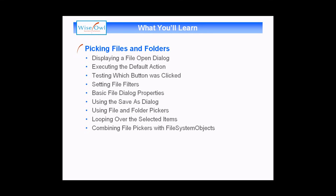We'll mention a few of the basic file dialog properties as well, such as setting the title and setting the initial folder path, before we move on and show you how to use the save as dialog and how similar that is to the file open dialog box. For the second half of the video we'll look at how to use file and folder pickers, which don't have default actions - they just return the path of a file or folder that you select. We'll explain how to loop over the selected items collection and also how you can combine file pickers with file system objects to do much more interesting things with the files or folders that you select.